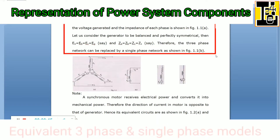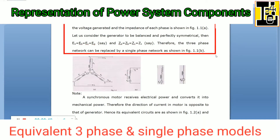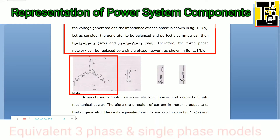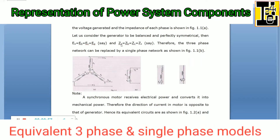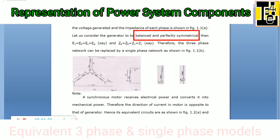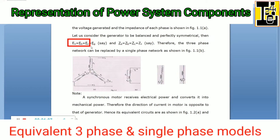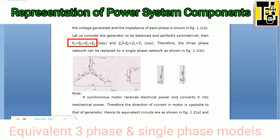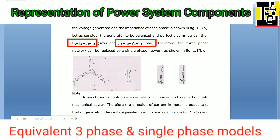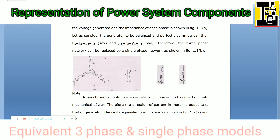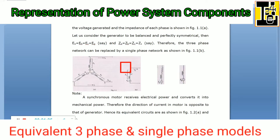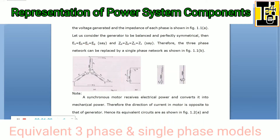The three-phase equivalent circuit of a synchronous generator depicting the voltage generated and the impedance of each phase is shown in this figure. Let us consider the generator to be balanced and perfectly symmetrical. Then we can say that the EMFs Ea, Eb, Ec are equal to Eg, and the self impedances Za, Zb, Zc are equal to Zs.